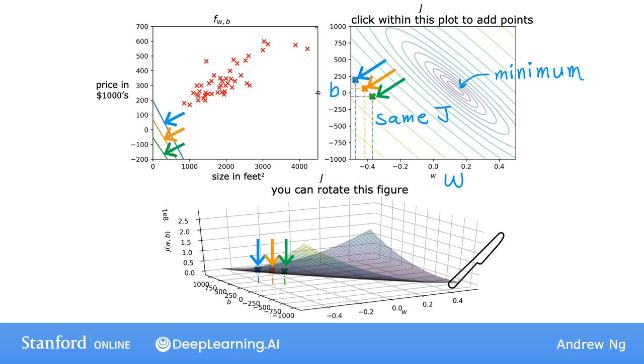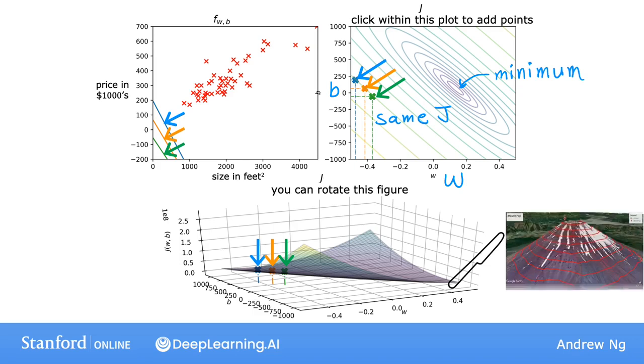If you haven't seen contour plots much before, I'd like you to imagine, if you will, that you're flying high up above the bowl, in an airplane or in a rocket ship, and you're looking straight down at it.